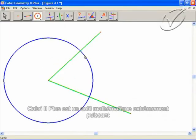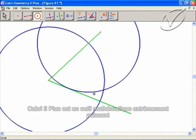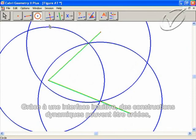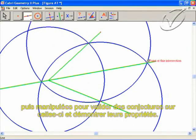Cabri Geometry 2 Plus is an extremely powerful mathematical tool for use in secondary schools and beyond. Using an intuitive interface, dynamic constructions can be created on screen and then manipulated to test predictions and prove rules.